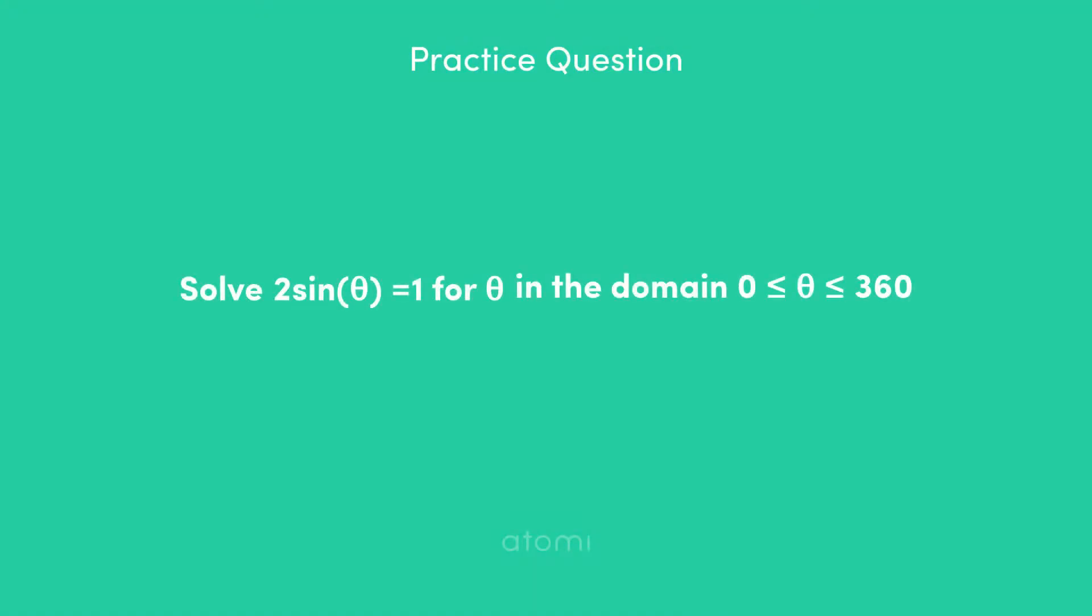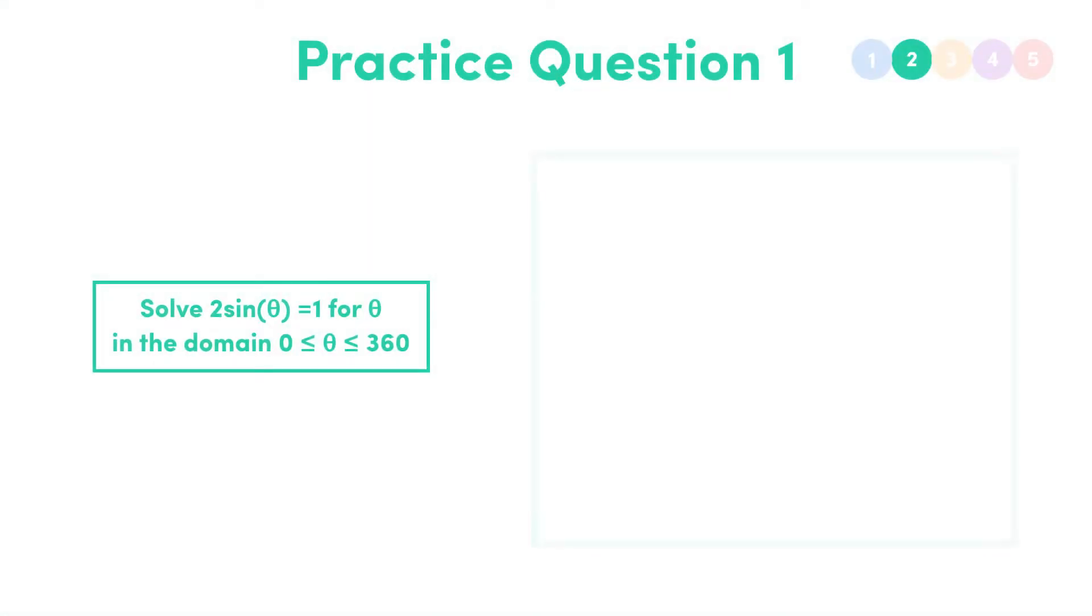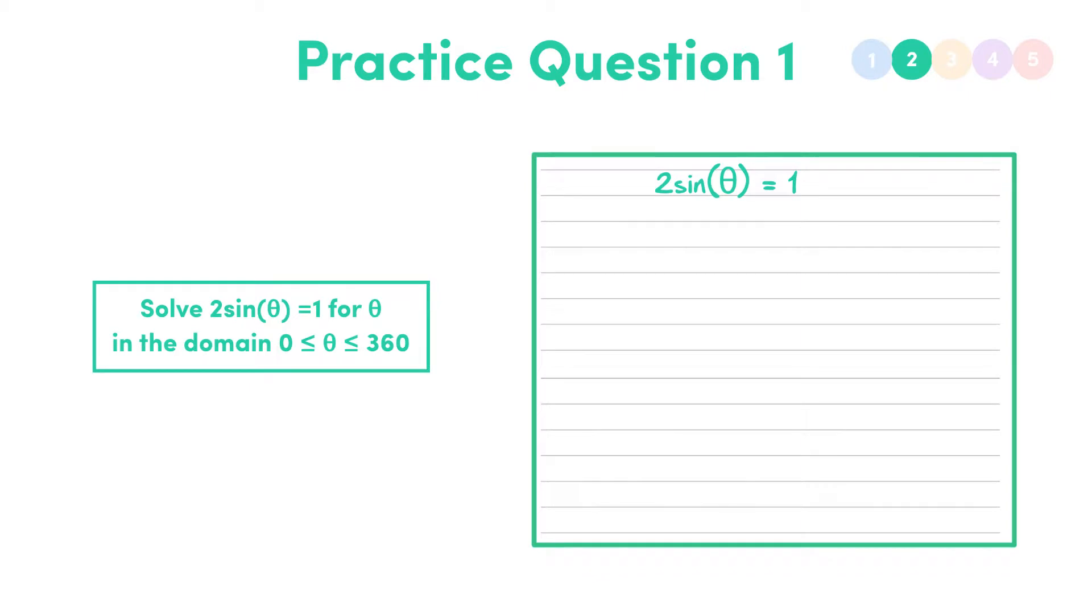Solve 2 sin theta is equal to 1 for theta in the domain theta between 0 and 360. Alright, so we're starting nice and simple. In this case, we want to solve for sin theta, and once we have that, we can solve the rest. So what do we do? We just treat it like a normal equation.